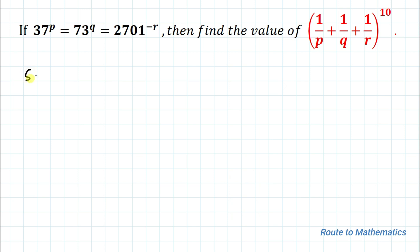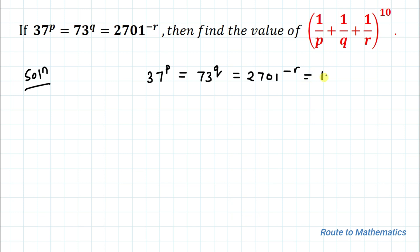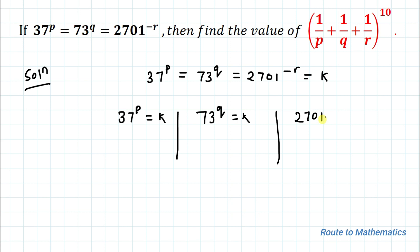Without any delay, let's start the solution. We have given that 37 to the power p equals 73 to the power q equals 2701 to the power minus r. Let's set all of these equal to a constant k. So from above we can write: 37^p = k, 73^q = k, and 2701^(−r) = k.